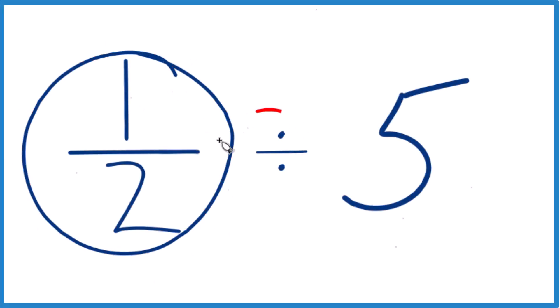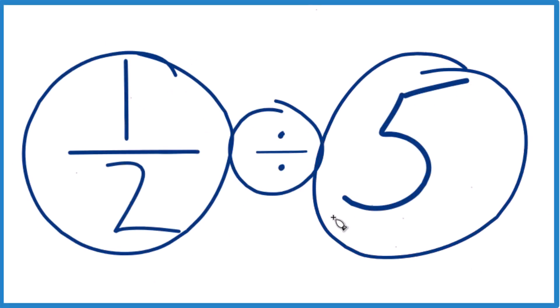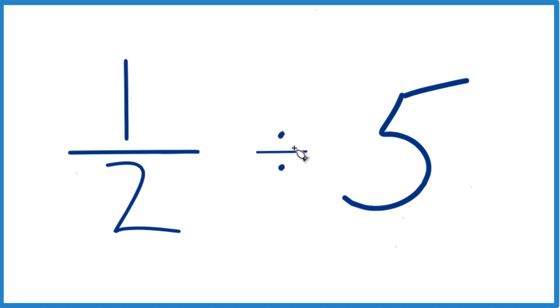Let's take 1 half divided by 5. We know that 1 half is smaller than 5, so when we try to see how many times 5 goes into 1 half, we're going to end up with a small number. We'll end up with a fraction.